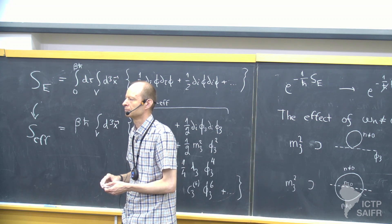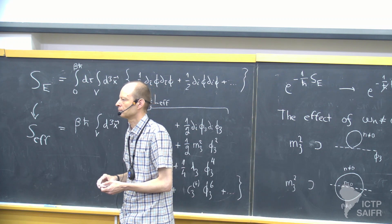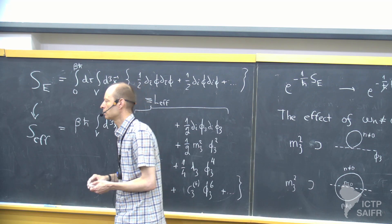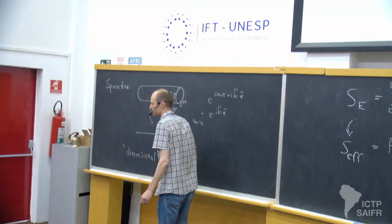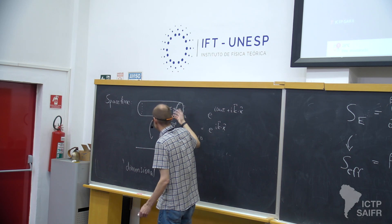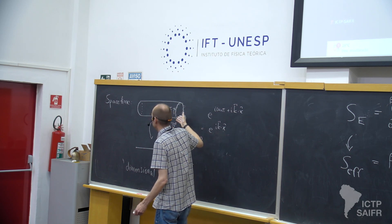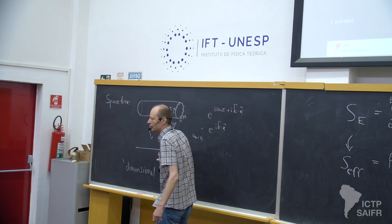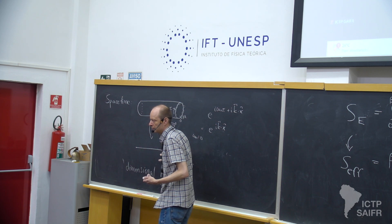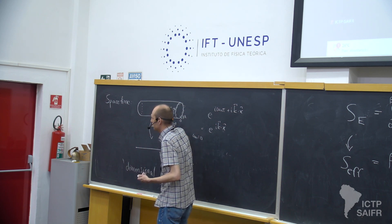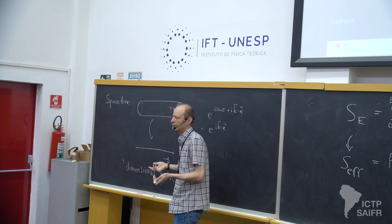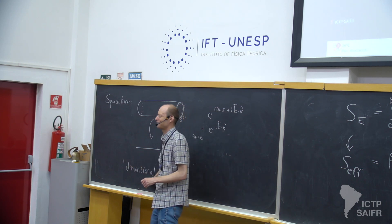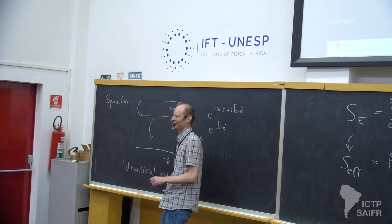Question from audience: Was there any specific reason to use compactification when regularizing the action, or could one do dimensional regularization or Pauli-Villars? Answer: This is not a regularization — it's really a reduction. This is a pictorial interpretation for what we do when we integrate out the non-zero modes. The zero modes that remain live only in three dimensions. If you do the computations in practice, you still have to regularize things as usual in field theory — you do that dimensionally. Dimensional reduction is not the same as dimensional regularization. The subscript three on the field denotes that these fields live in three dimensions, reflecting the dimensional reduction from four to three.